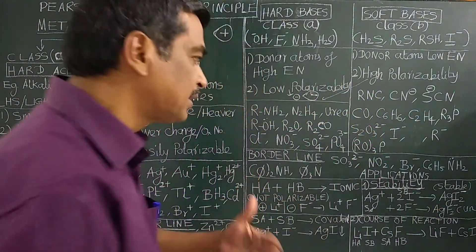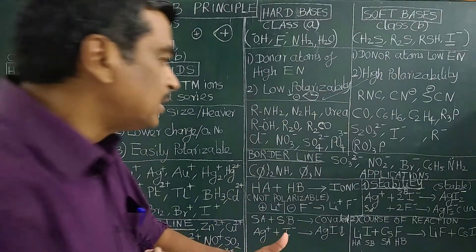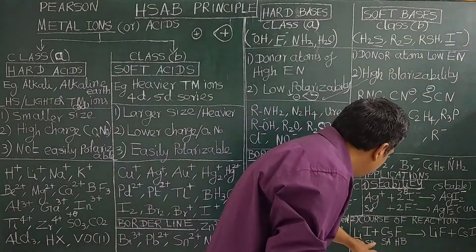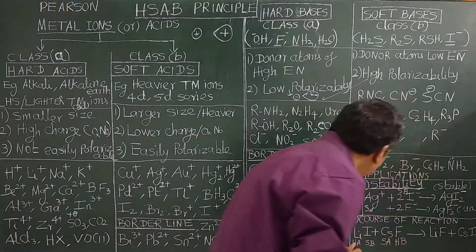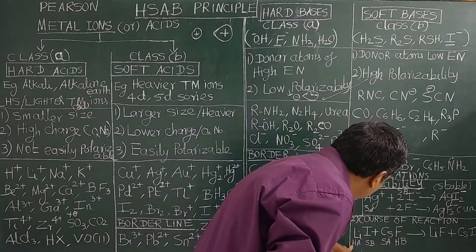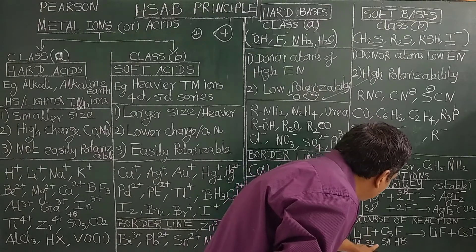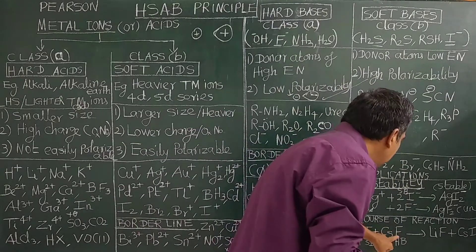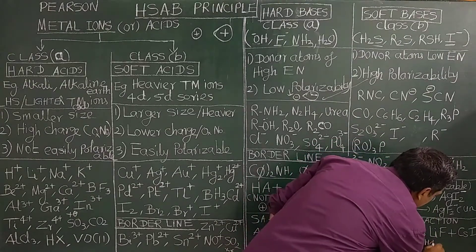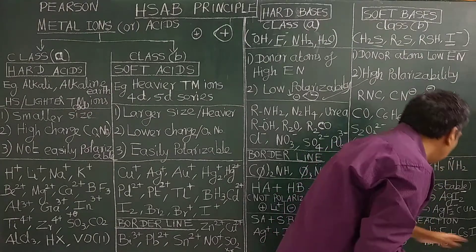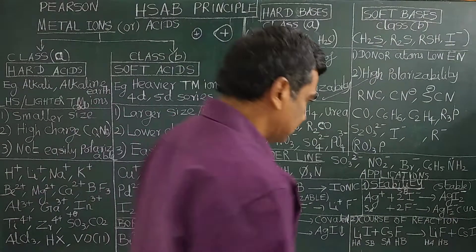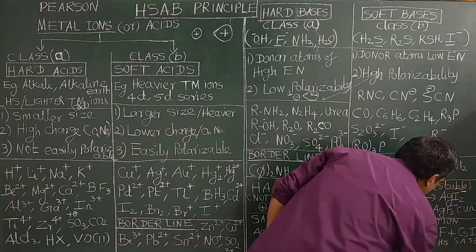The second application is predicting the course of reaction — whether the reaction goes in the forward or reverse direction. For example, LiI reacting with a compound: Li+ is a hard acid and I− is a soft base, whereas the product can pair hard acid with hard base. Hard acid–hard base interactions are preferred, so the reaction proceeds in the forward direction.